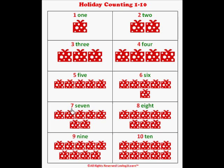Here's the number seven. Here's the word seven. Spell the word seven with me: S-E-V-E-N. Let's count the presents together: one, two, three, four, five, six, seven. Here's the number eight. Here's the word eight. Spell the word eight with me.